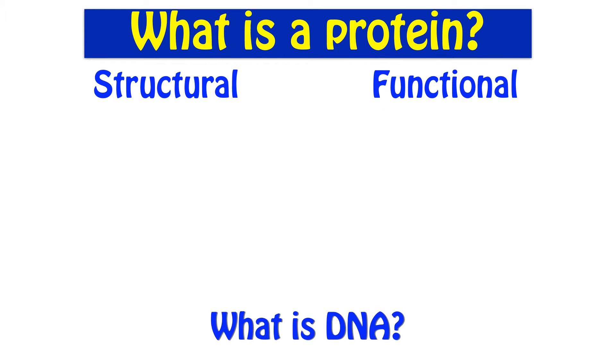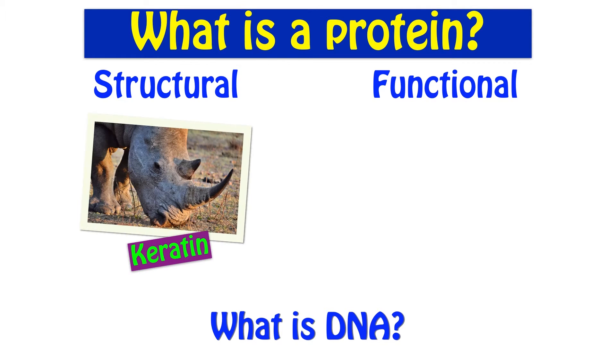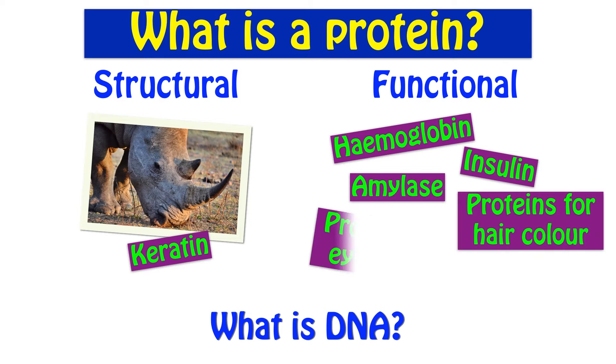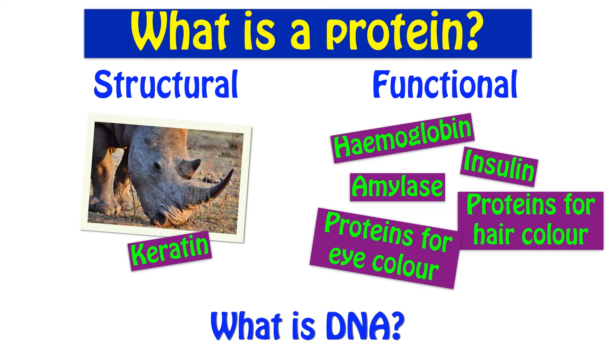We've got structural proteins as well as functional proteins. An example of a structural protein is keratin. This is present in rhino horns, in hair, in nails, etc. Some examples of functional proteins are hemoglobin, insulin, amylase, and amylase is an enzyme. Of course, all enzymes are examples of proteins, but also you've got proteins that are involved in determining your hair color, proteins that determine eye color and all sorts of different functions.